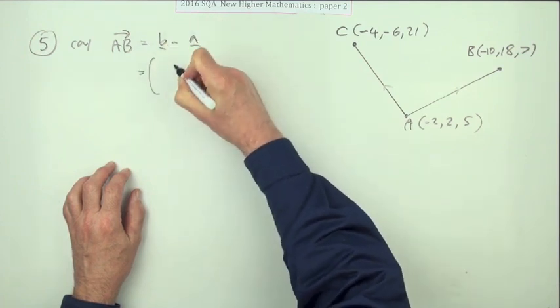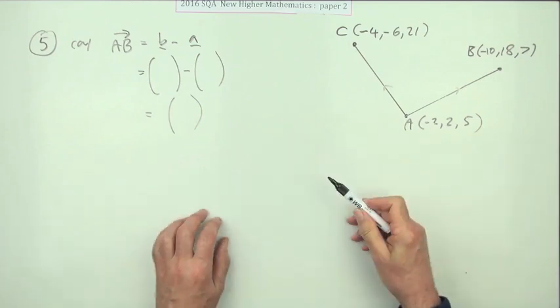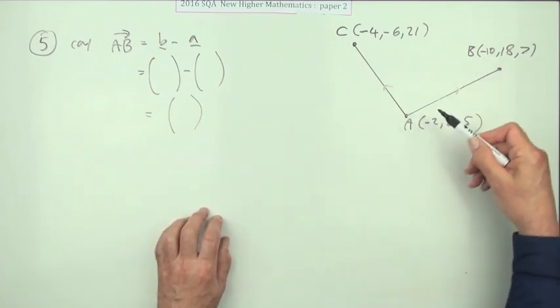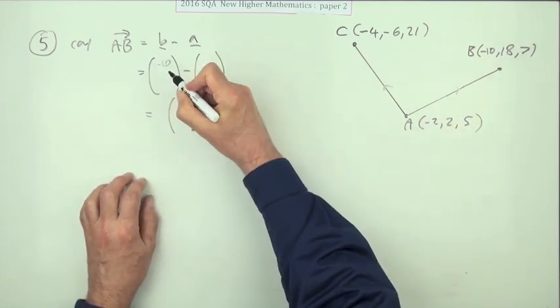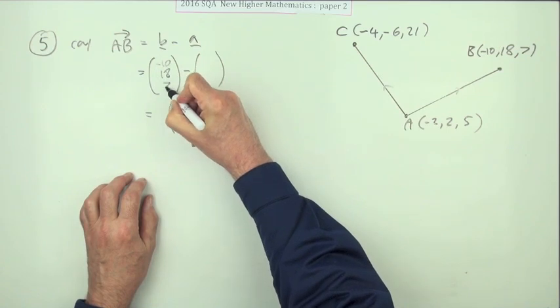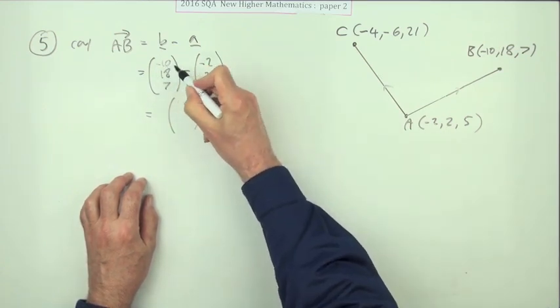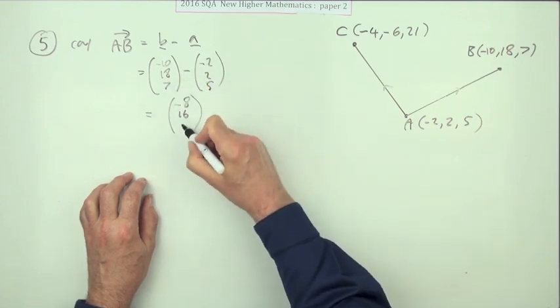If we just spell it out for safety, because you could otherwise just say AB is going to be negative 2 to 10 would be 8 back, but we'll not. So we've got negative 10, 18, 7, take away negative 2, 2, 5. So negative 10 plus 2 is negative 8, that'll be 16, and that'll be 2.